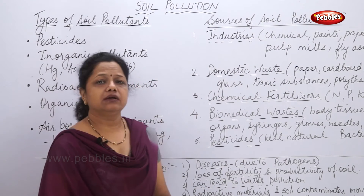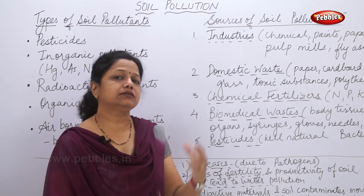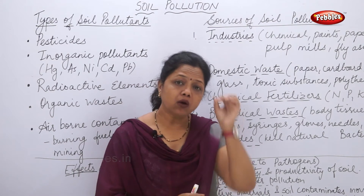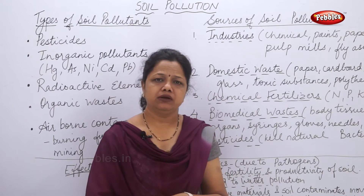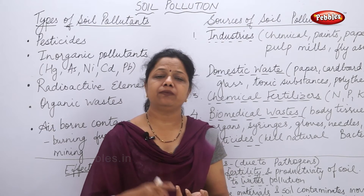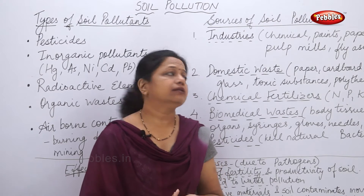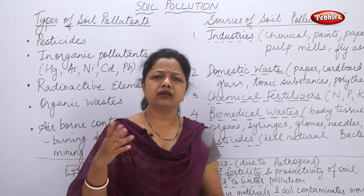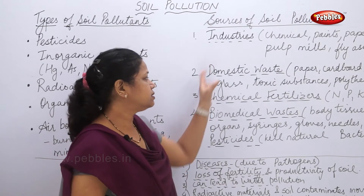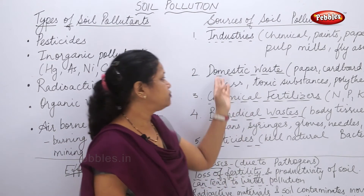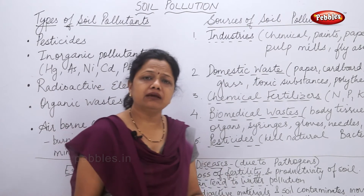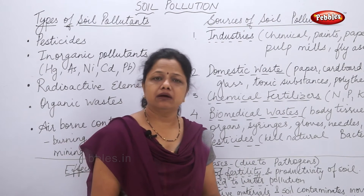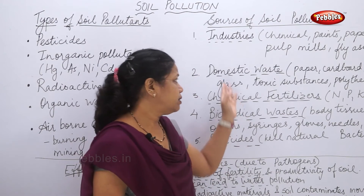The second source is domestic waste — the waste coming from the household. Think about what your dustbin contains in a whole day: pieces of paper, glass, plastic, kitchen waste, polythene bags, pencils, rubber, cardboard. Everything you put in the dustbin — anything from the kitchen or the household that is no longer needed — forms domestic waste.